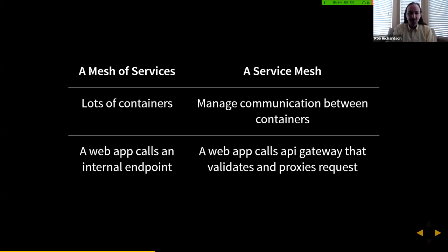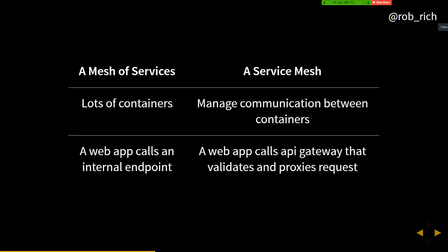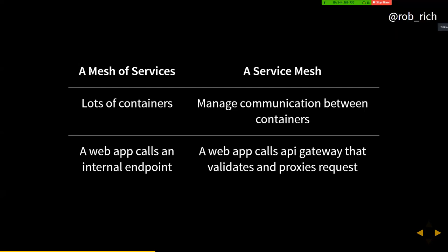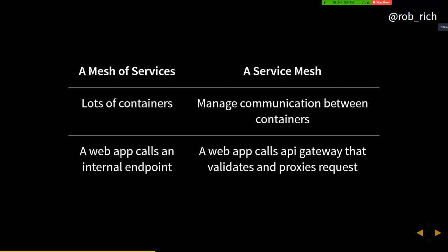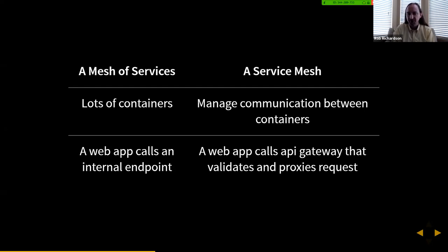Any questions there? Someone asked: what kind of API server do we use? What type of API server do we need to pull in a service mesh? Great question. Today we're going to look at Istio, which is an example of a service mesh for Kubernetes. If we're looking at the hardware behind it, it's all part of our Kubernetes cluster — there isn't more or less Kubernetes that we need to pull this off.